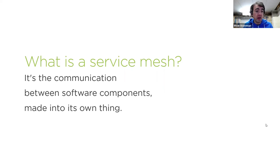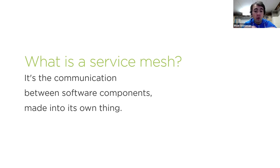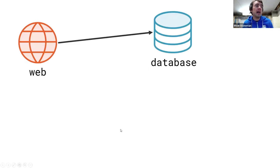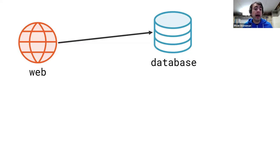Istio is a service mesh, and the idea of a service mesh is that it takes the communication between your application components and makes it into its own separate entity. Imagine a distributed application with lots of different pieces all talking to each other — they all need the same concerns to deal with their communication, and you can bring all those things into one place in your service mesh. The important thing is it's about distributed applications — not necessarily microservices or Docker or Kubernetes. You can do this without containers, but the containerized world makes everything much, much easier.